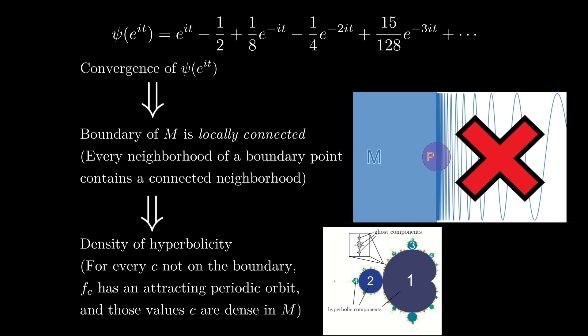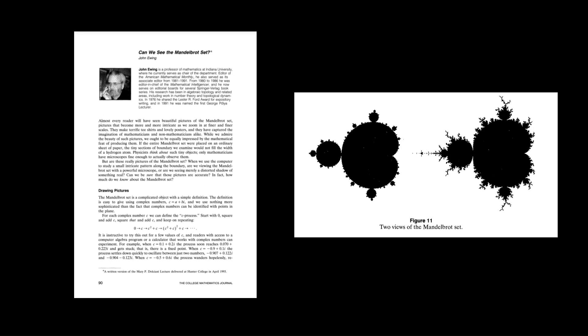I thought I would finish by mentioning this interesting article by John Ewing, who was one of the first mathematicians to look at properties of these Fourier series related to the Mandelbrot set. And although the article was over 30 years old, actually most of the open problems that he mentions in this article are still unsolved, including the two I just mentioned, the local connectivity and the hyperbolicity conjectures.